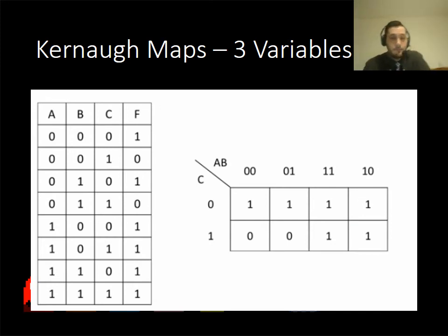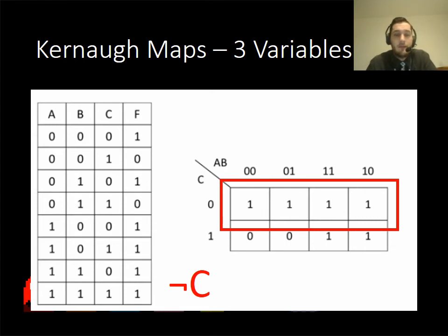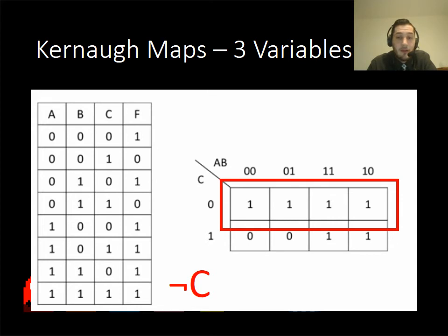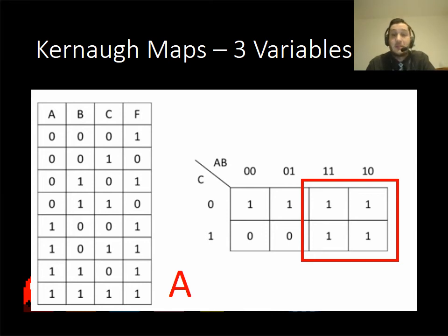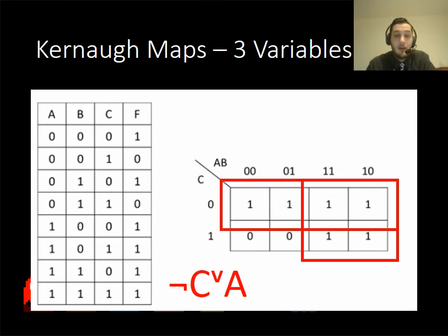In this next example, the input has gone in as a zero, which means everything in that section is a NOT — so that pattern is NOT C. There's another pattern similar to our previous slide: A is on and A is on, but it's independent — B can be on or off and C can be on or off. So we end up with NOT C OR A.